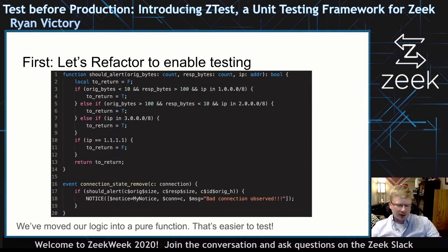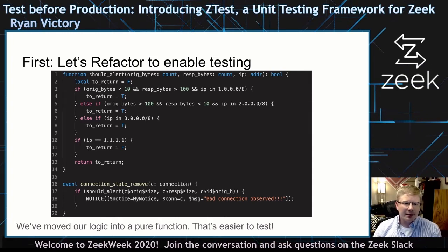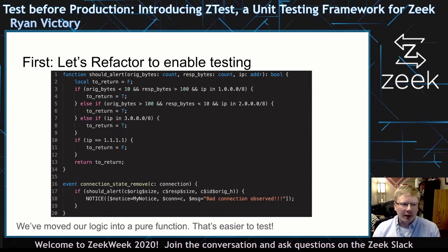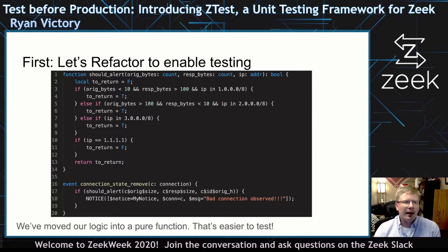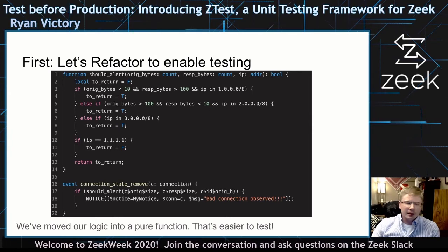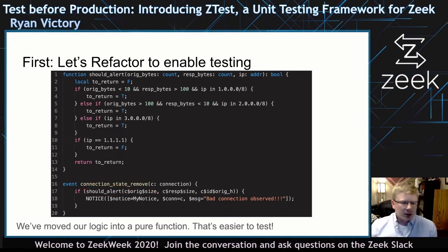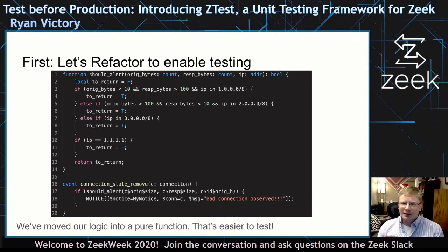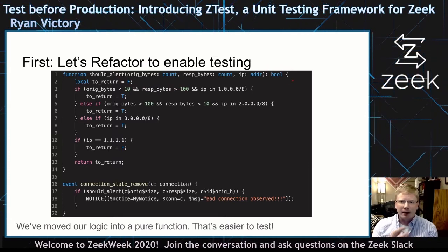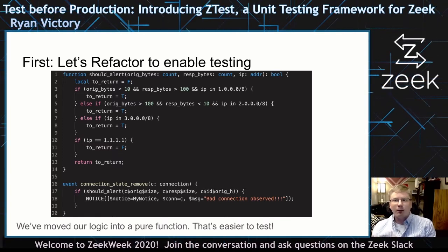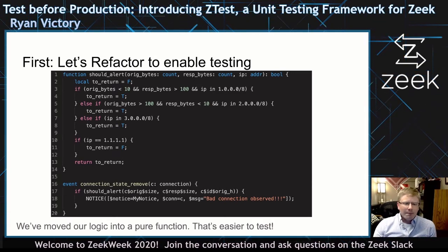First, to talk about testing, let's refactor this. A big part of unit testing is writing code that is easy to test. The event handler is hard to test directly, so I've refactored the code and extracted a method called should_alert that takes in just the key parts of the connection I care about in order to decide whether I should alert on it. Otherwise, the code is the same — I'm just calling it in an if conditional inside the event handler. We've created a pure function, a function without side effects. That's really nice for testing. It takes in some parameters and returns a value we can observe and assert against. If I give these inputs, I expect this output. A pure function will always give me the same output for the same inputs — great code, easy to test.